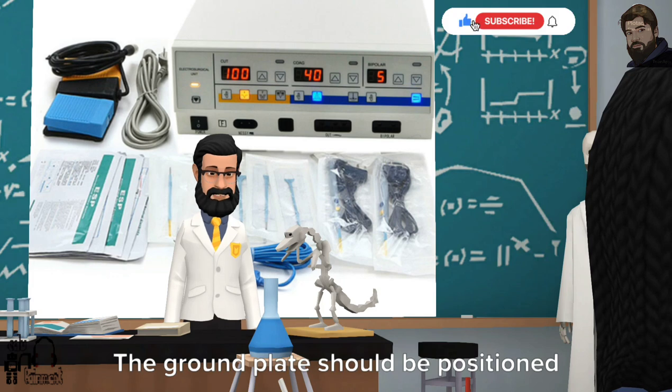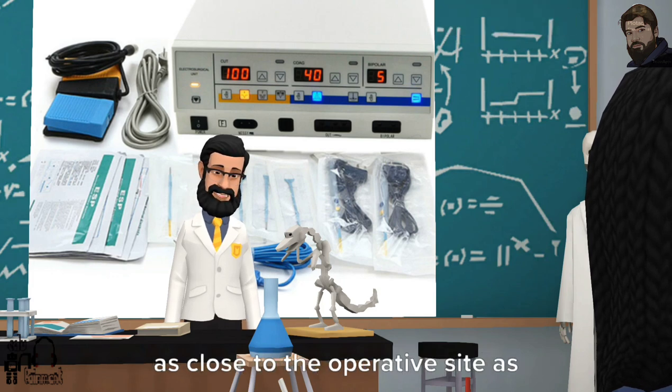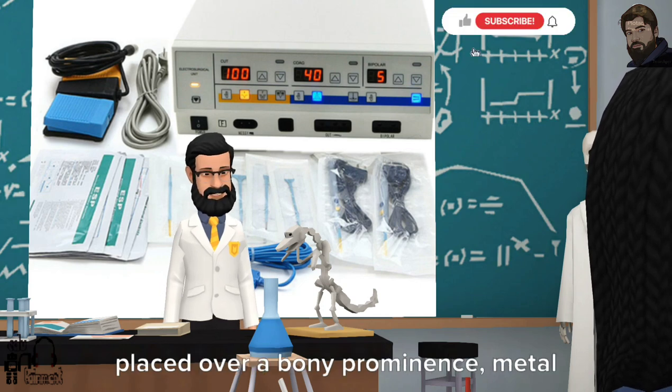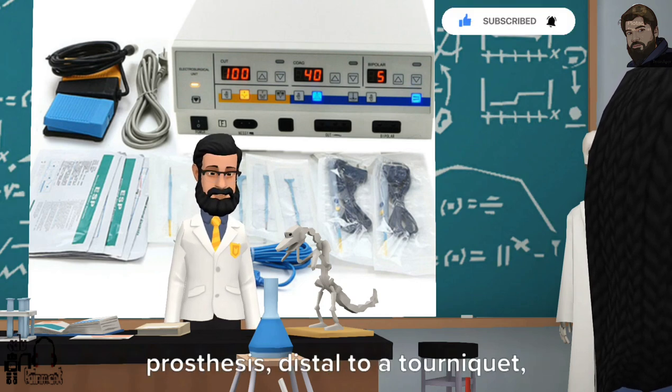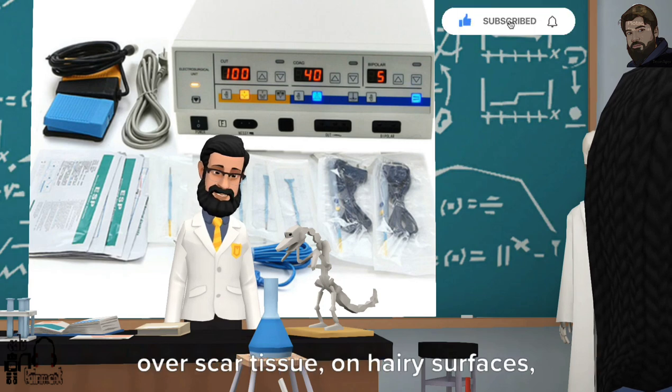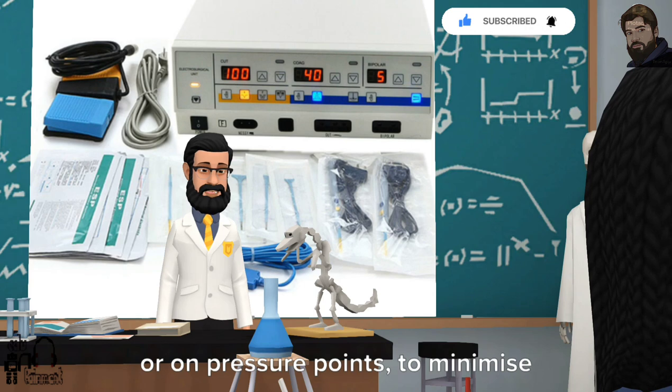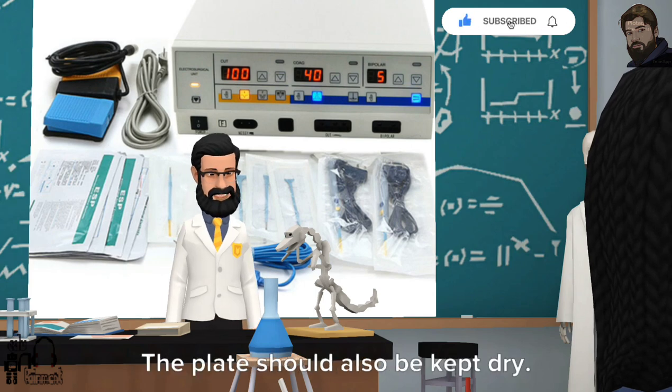The ground plate should be positioned as close to the operative site as possible, however it should not be placed over a bony prominence, metal prosthesis, distal to a tourniquet, over scar tissue, on hairy surfaces, or on pressure points to minimize the risk of burns. The plate should also be kept dry.